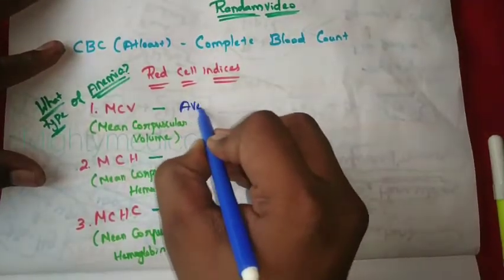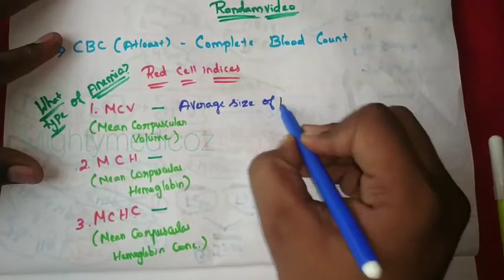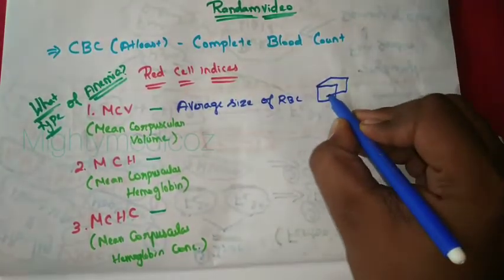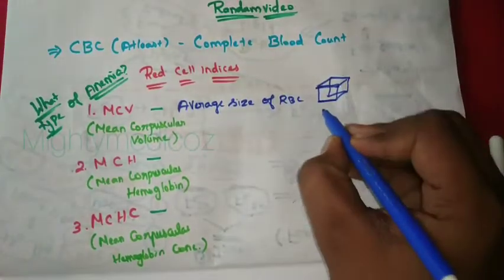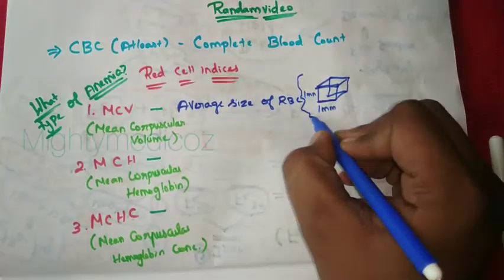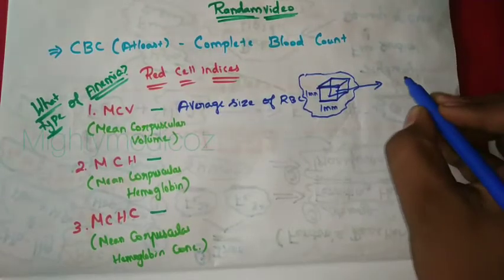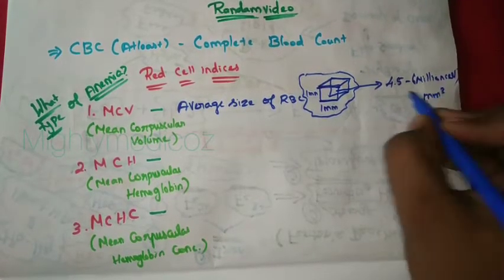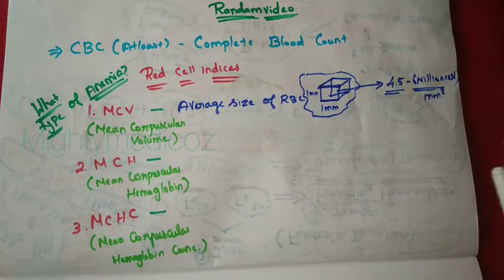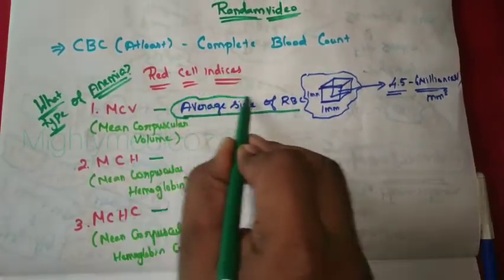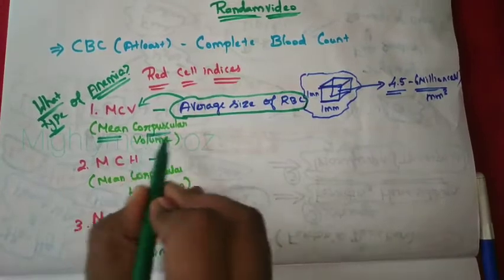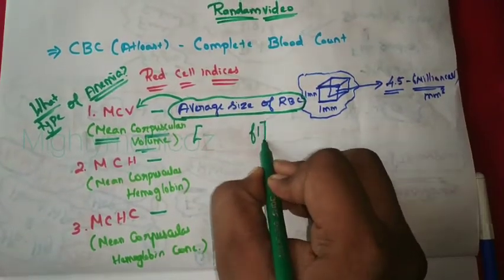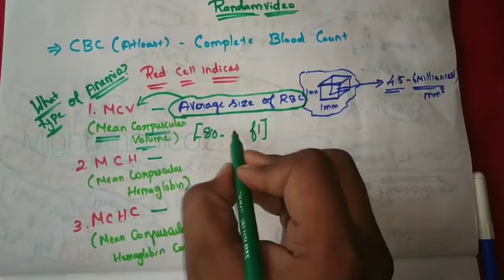MCV means the average size of a red blood cell. Imagine a cubic box where each side is 1 millimeter. In normal blood, there are 4.5 to 6 million RBCs per cubic millimeter, and MCV is the average size of each RBC. MCV is expressed in femtoliters, with a normal value of 80 to 96 femtoliters.